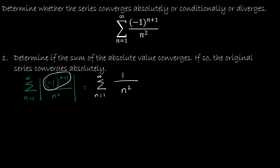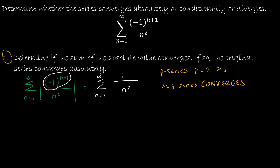This is a p-series, where the base is changing but the exponent remains the same. This is a p-series where p equals 2, which is greater than 1, and therefore this series converges. Since the sum of the absolute value converged, the original series, the sum from n equals 1 to infinity of negative 1 to the n plus 1 over n squared, converges absolutely.